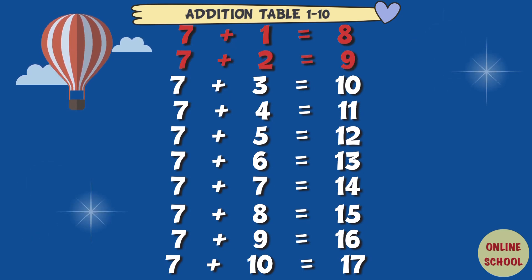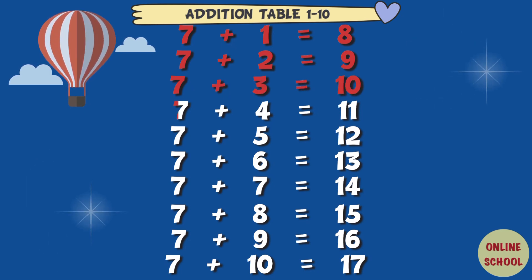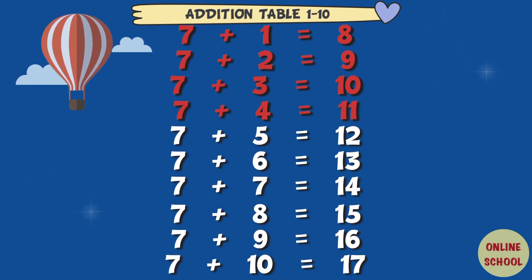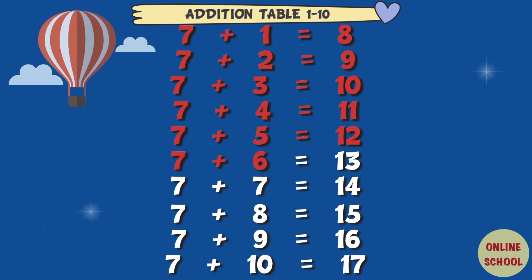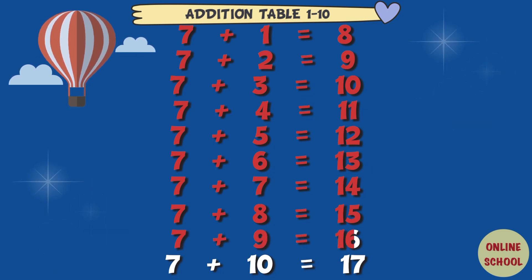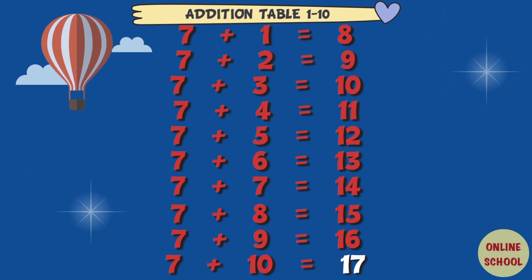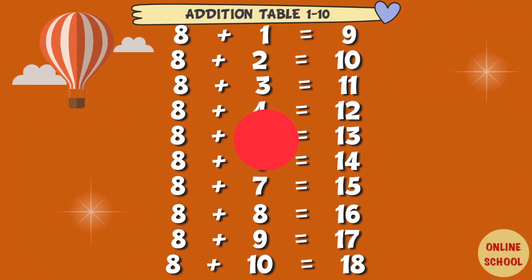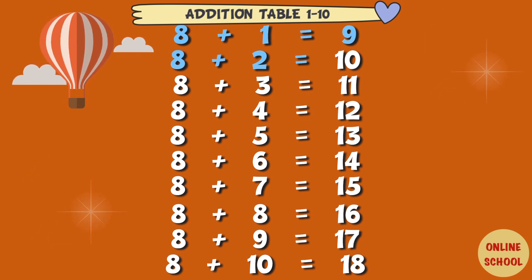7 plus 2 equal 9, 7 plus 3 equal 10, 7 plus 4 equal 11, 7 plus 5 equal 12, 7 plus 6 equals 13, 7 plus 7 equal 14, 7 plus 8 equal 15, 7 plus 9 equals 16, 7 plus 10 equals 17. Table 8: 8 plus 1 equal 9.